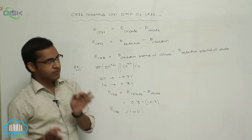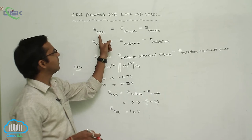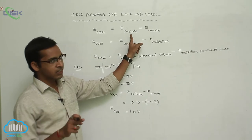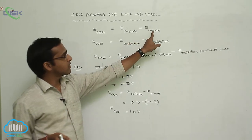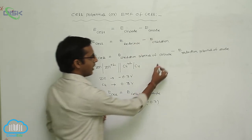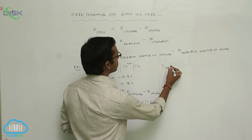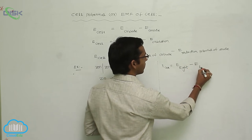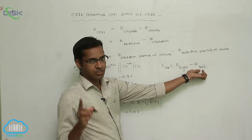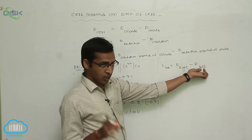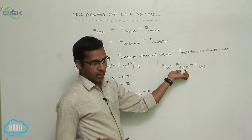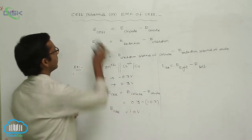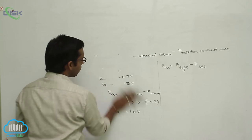The EMF of cell or cell potential is calculated with E cell equal to E cathode minus E anode. Generally, cathode is represented on the right-hand side, and anode on the left-hand side. Another equivalent equation is E cell equals E right minus E left. The left-hand side represents oxidation electrode and the right-hand side represents the reduction electrode.